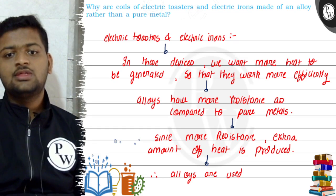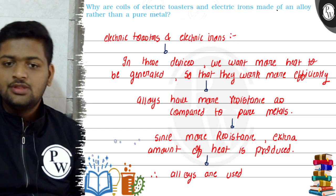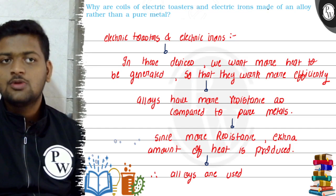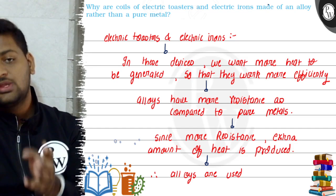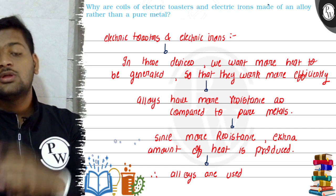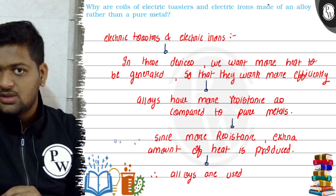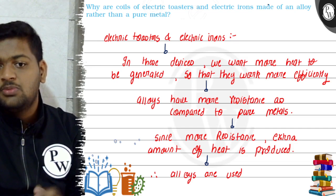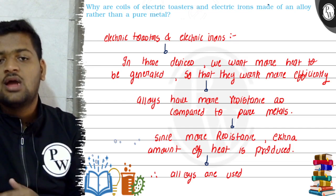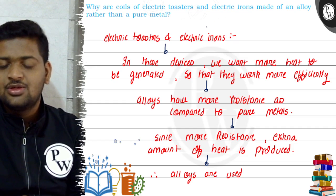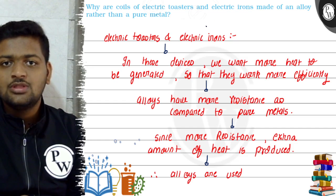So what they are asking is why coils of electric toasters and irons are made of alloys. Coils of electric toasters and irons are made up of alloys because alloys have more resistance as compared to pure metal, so it will lead to generation of more amount of heat. Because of high resistance, what we require is generation of heat because toasters and irons are made to work at high heat. The more amount of heat they are, the more efficient they are. So this is our answer to this question, thank you.